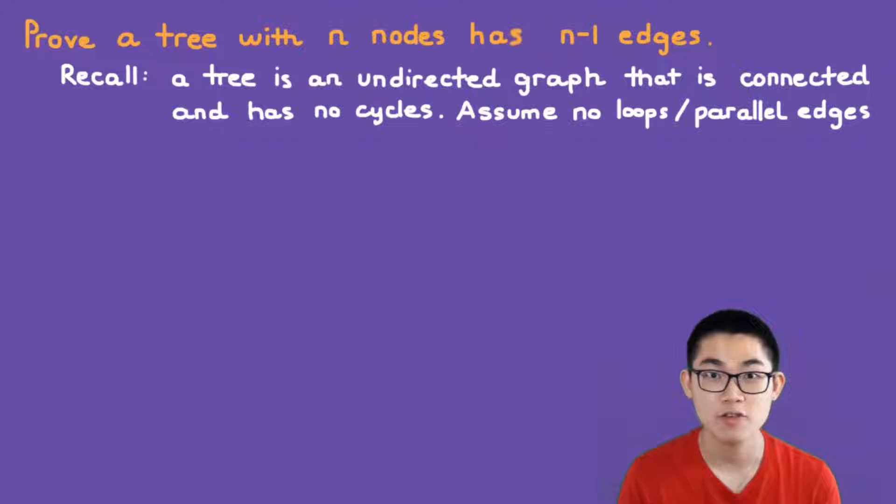So for example, if you have a tree with 10 nodes or 10 vertices, then you know for sure that it has 9 edges. And this is one of the important graph theorems in math and computer science.